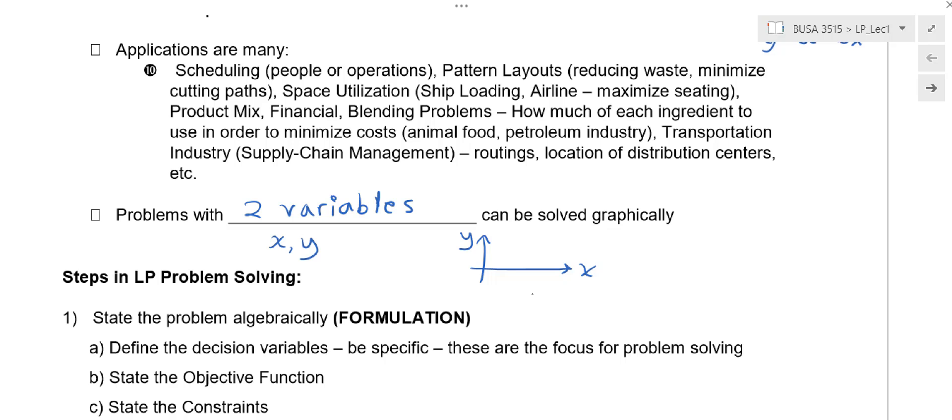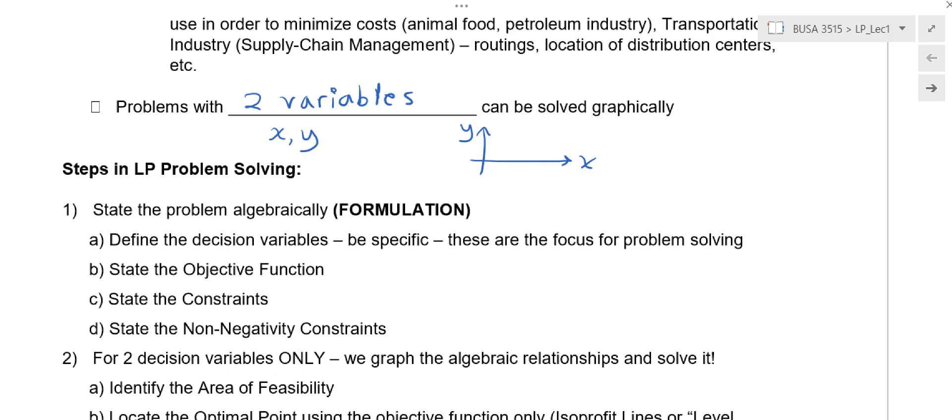Moving on, so here are the steps that we use when we do linear programming. So first, we try to state the problem algebraically. We're going to write down the equations for the problem. What are they? What is the objective function? What are the constraints in terms of equations? And are there any what are called non-negativity constraints?